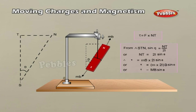The direction of vector τ is such that the dipole tends to set itself parallel to the field vector B. If θ equals 90° and B equals 1, then M equals τ — that is, the dipole moment is numerically equal to the torque required to keep the dipole perpendicular to a uniform magnetic field of unit strength. In the CGS system, the unit of magnetic dipole moment is erg/Gauss. In the SI system, the unit is Nm per tesla.